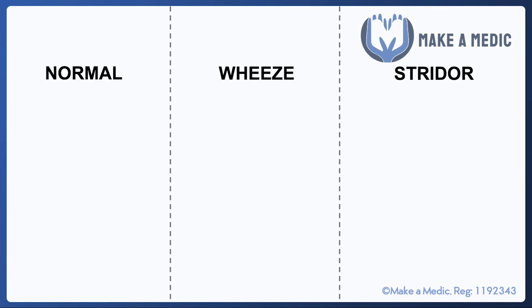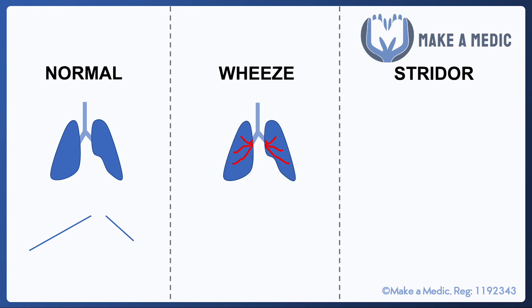Briefly, the difference between wheeze and stridor: with a normal set of lungs and airways, if you place your stethoscope under your axilla you'll hear normal vesicular breath sounds — a prolonged inspiratory phase, a gap, then an expiratory phase. Wheezing is caused by the small airways within the thorax becoming narrowed, producing a rattling, high-pitched sound during the expiratory phase, along with a prolonged expiratory phase.